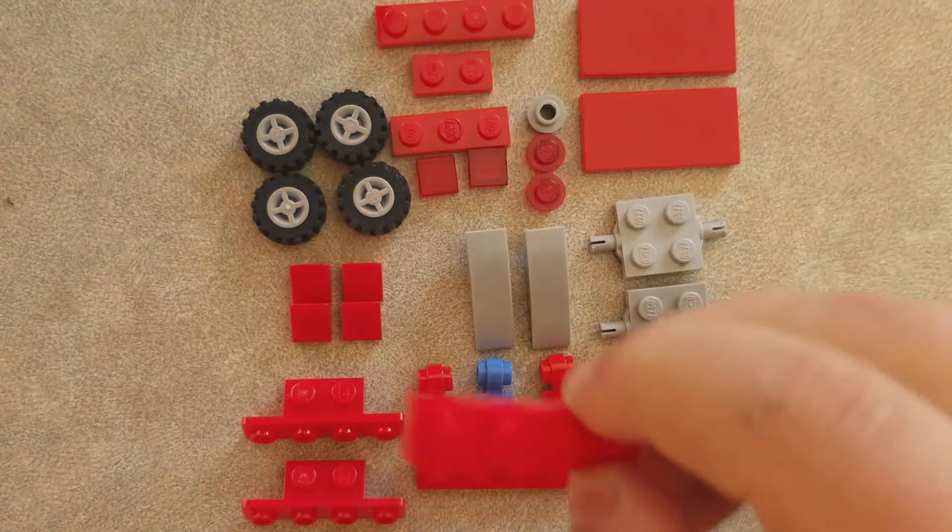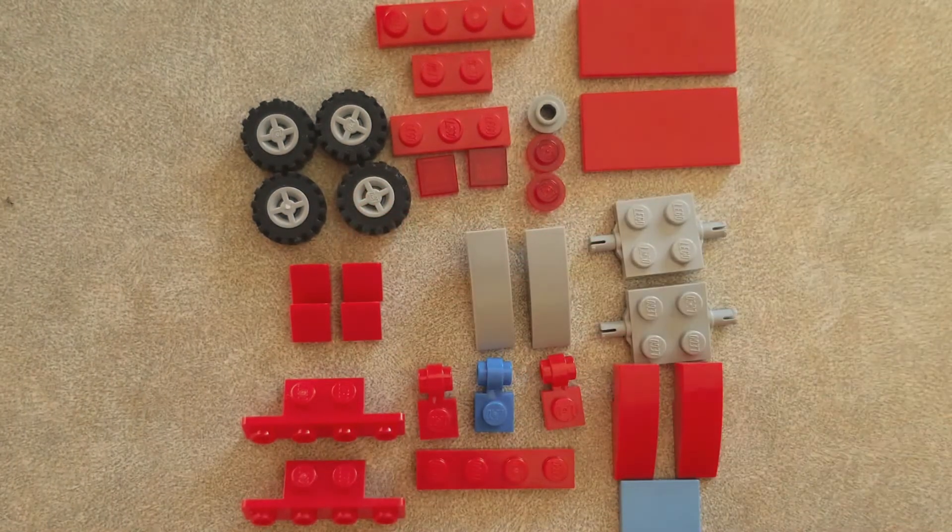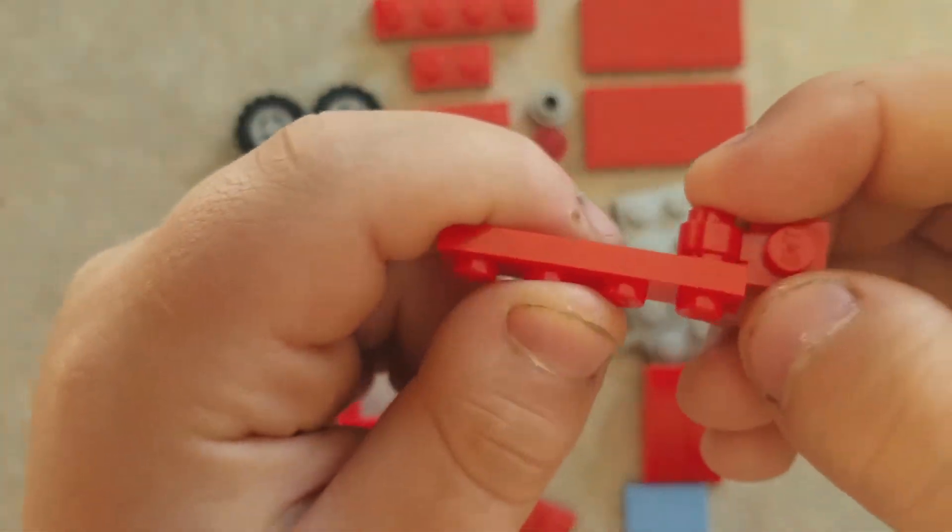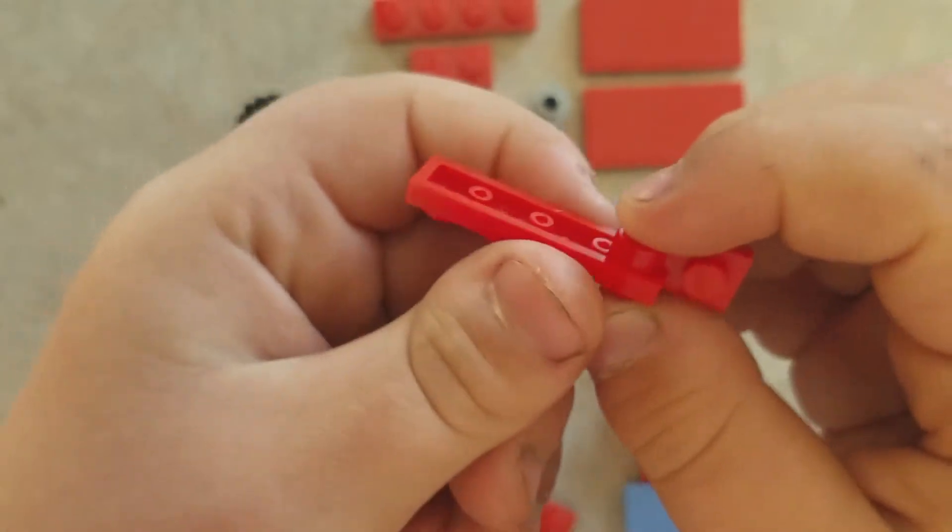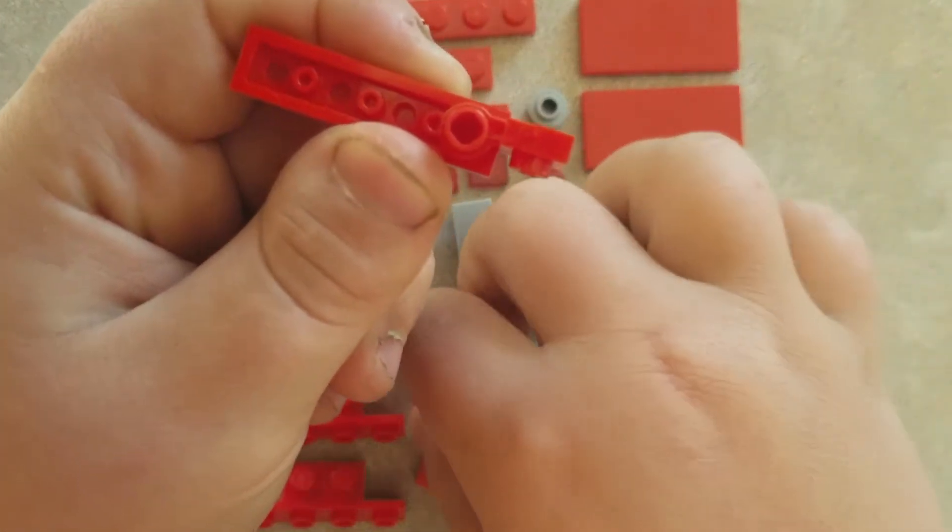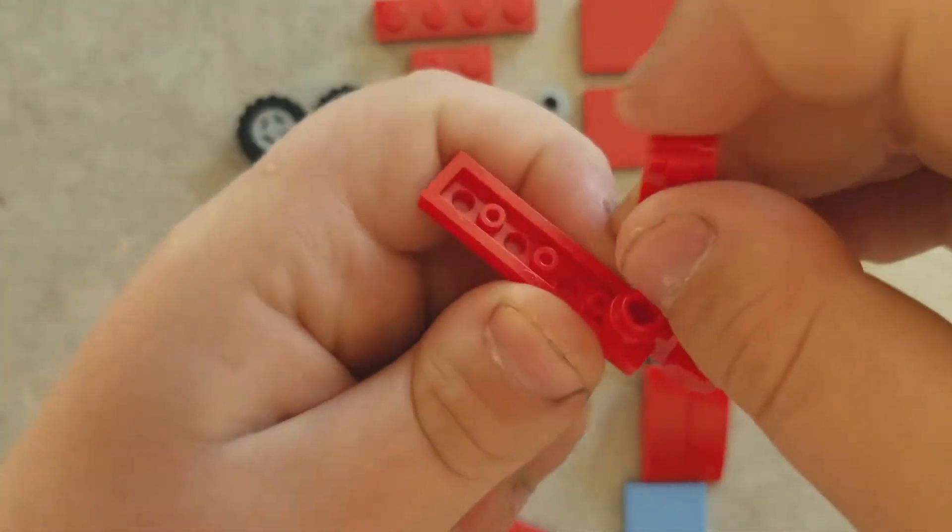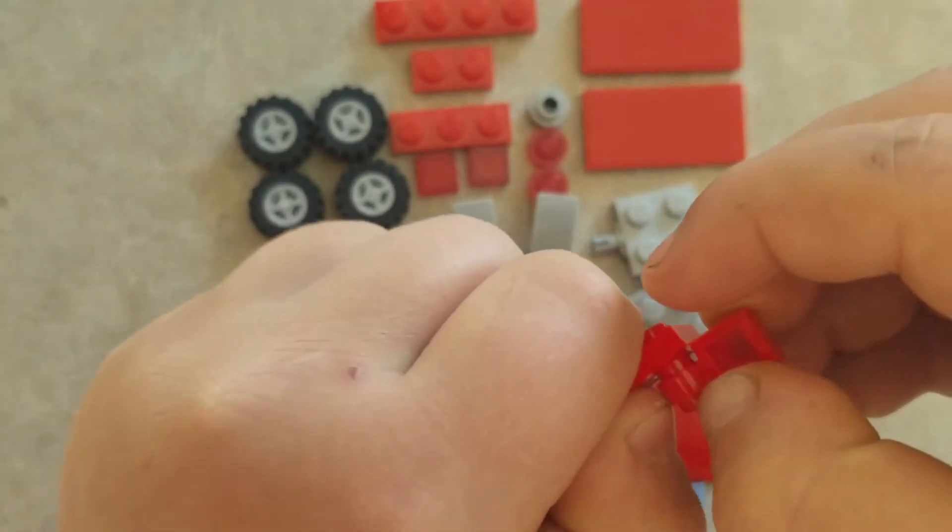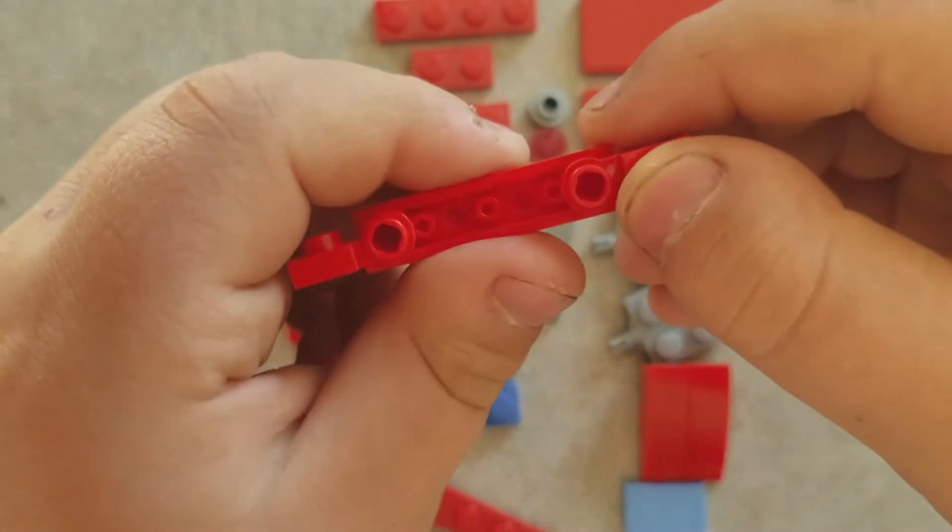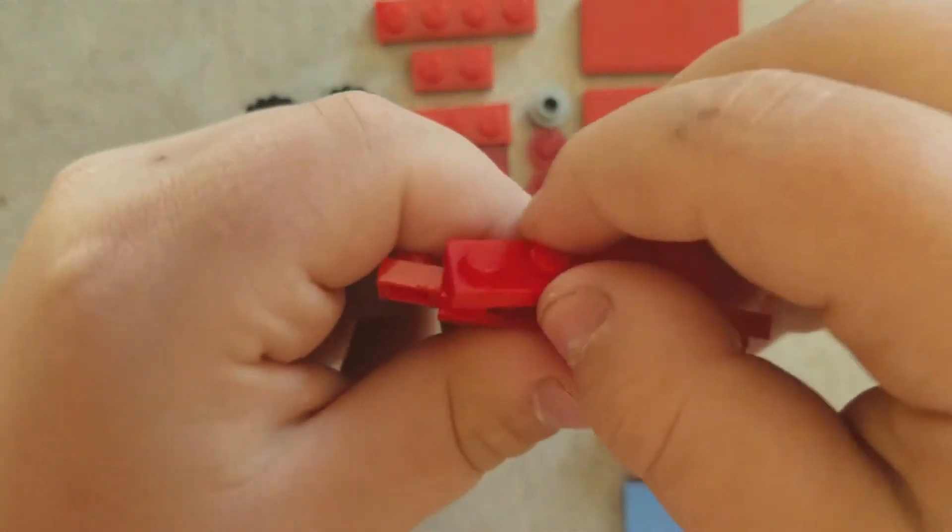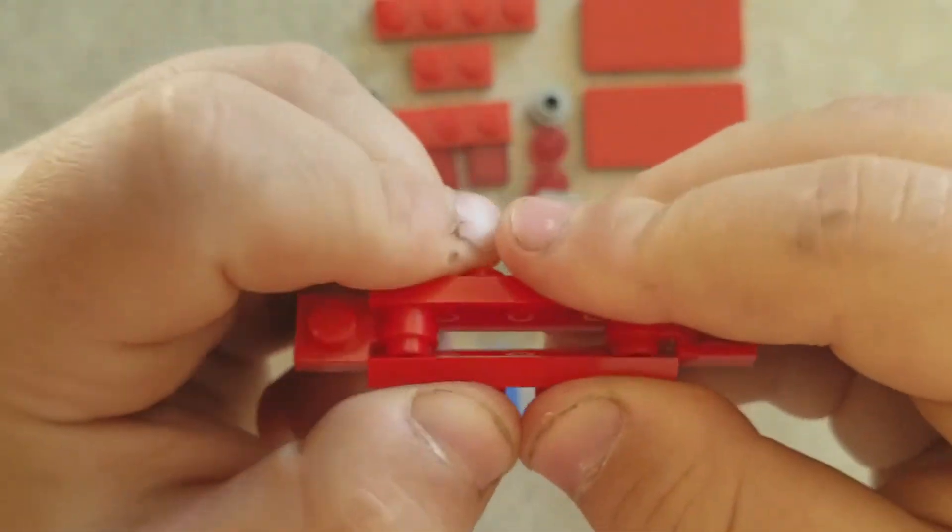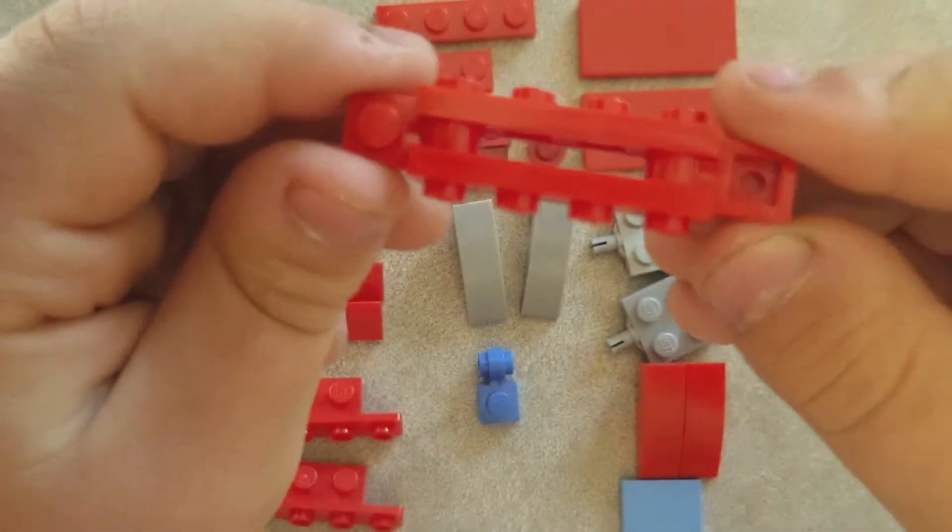First grab this plate you see right here and grab one of these side building pieces. Put it on like this. Get another one, put it on the other side. Grab the other plate piece like that.